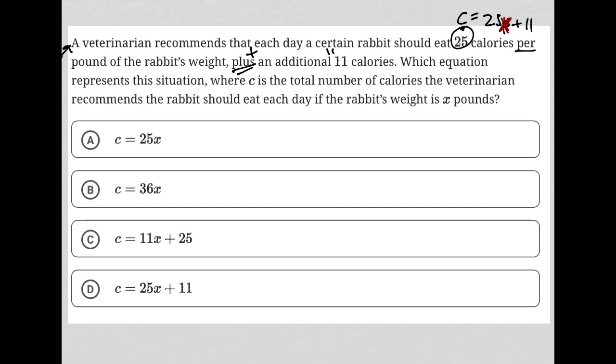So all I've really done here is use a strategy called translate word problem, TWP, where I've taken the words that I've read and converted them into a mathematical statement. That mathematical statement is C equals 25x plus 11.